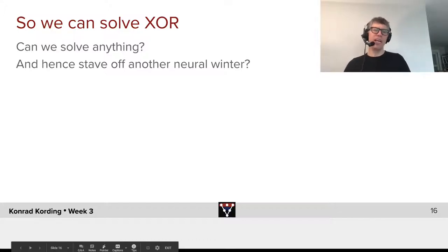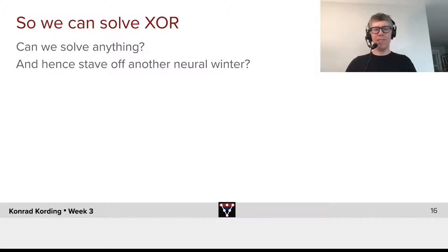So we saw that we can solve the XO problem, but can we solve anything? Can we stave off another neural winter coming from there being certain functions that we cannot approximate? Actually, yes, the problem of not being able to approximate some function is not going to come back.